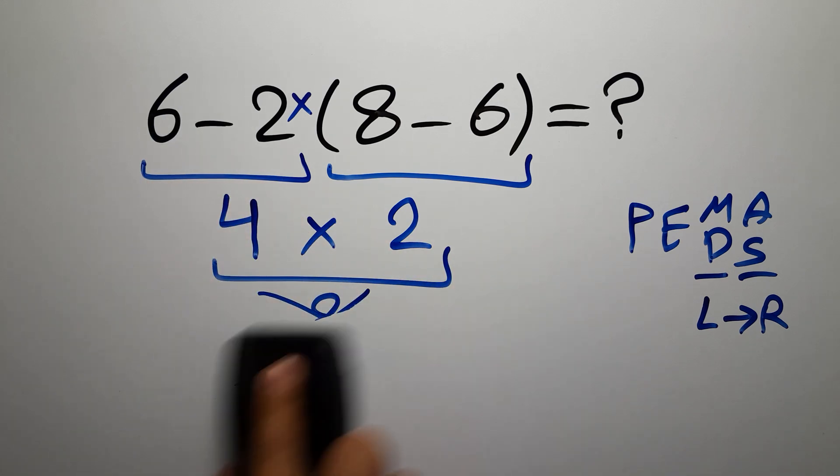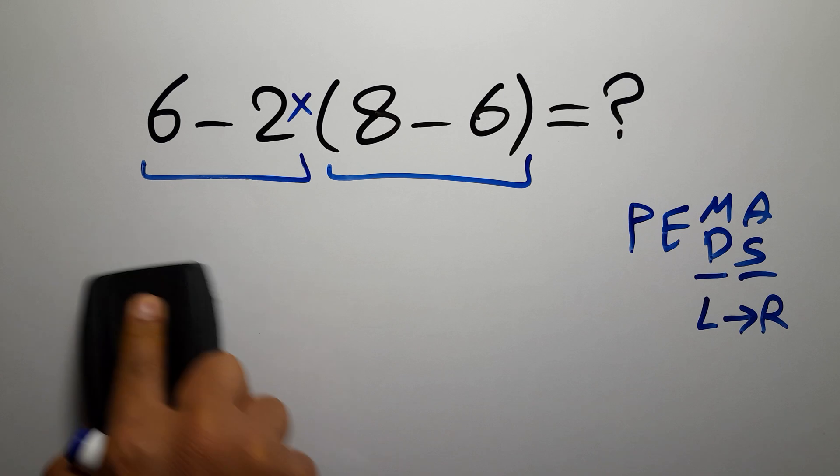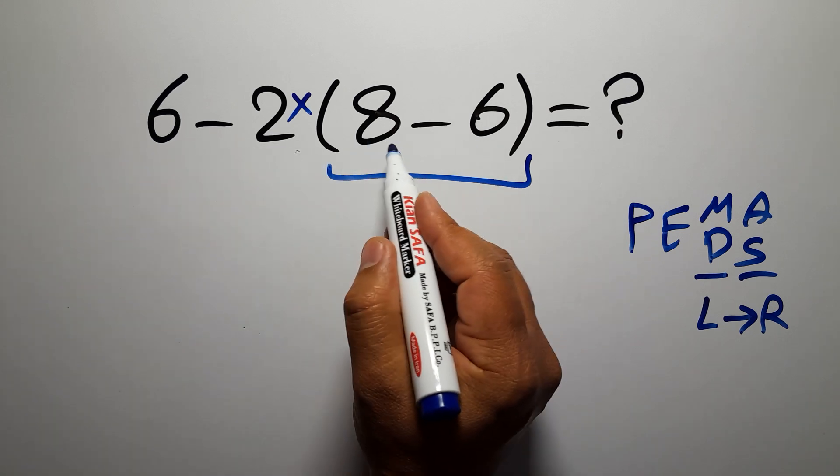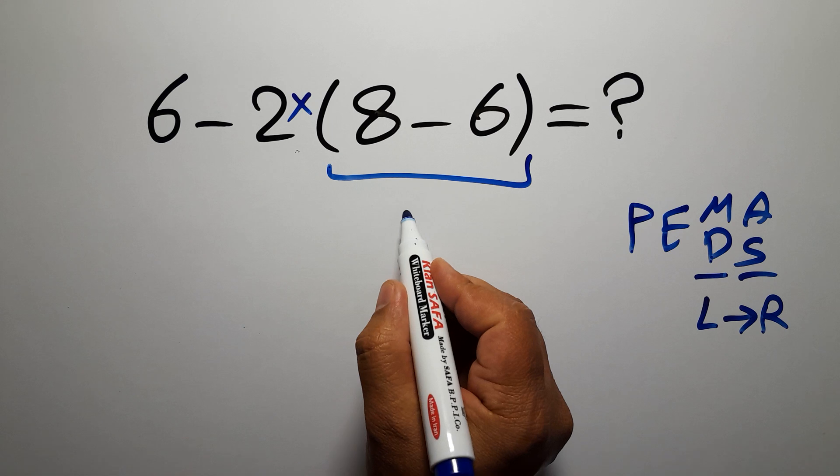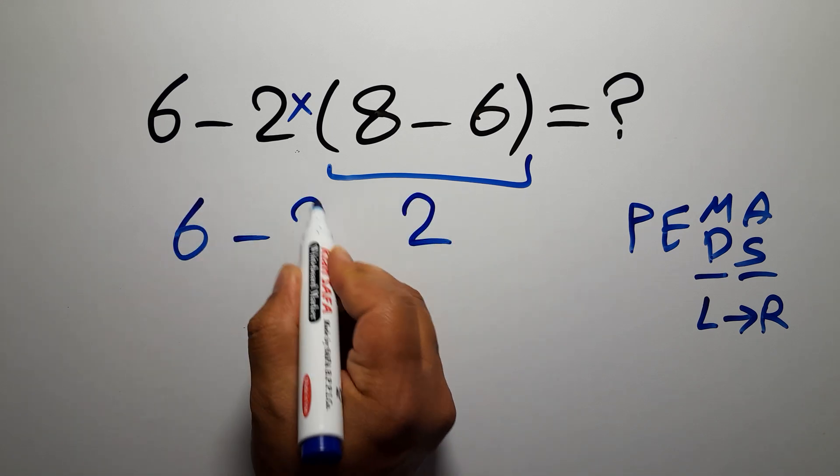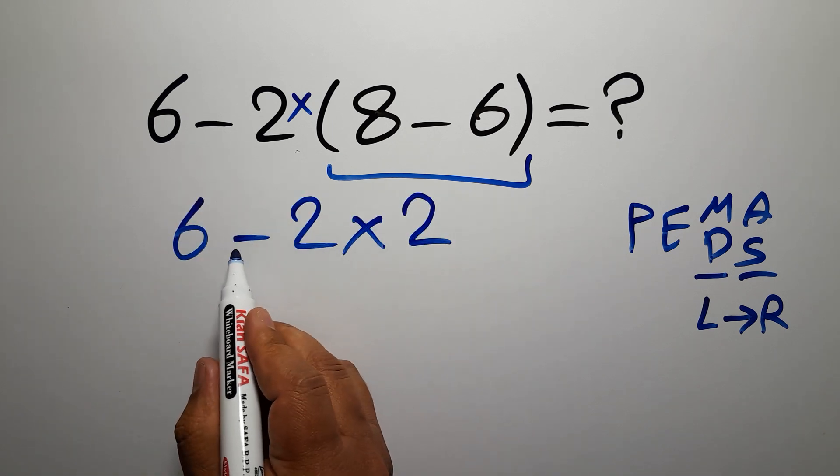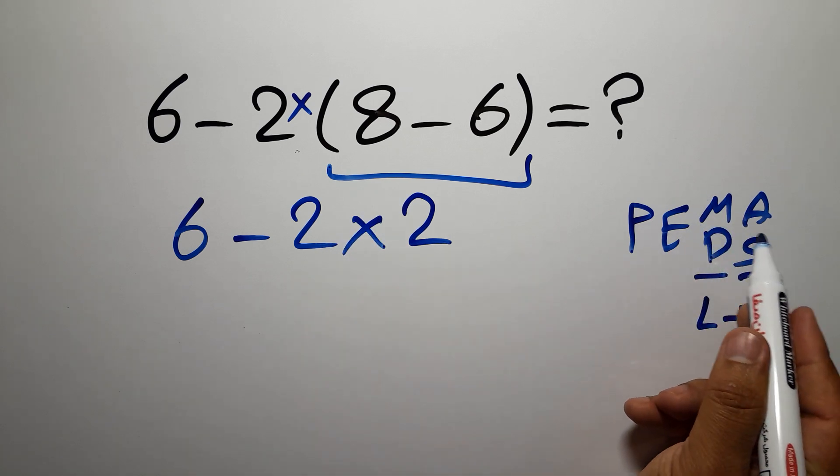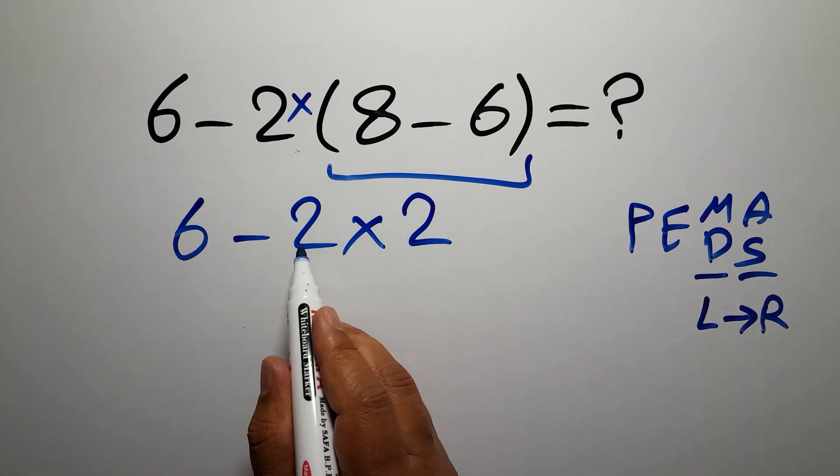Inside this parentheses we have 8 minus 6 which equals 2, so 6 minus 2 times 2. Now we have 1 subtraction and 1 multiplication. In PEMDAS, multiplication comes before subtraction, so now we have to do this multiplication.